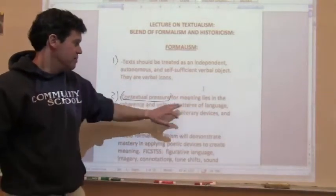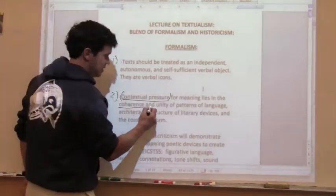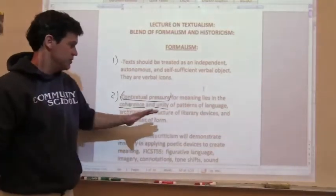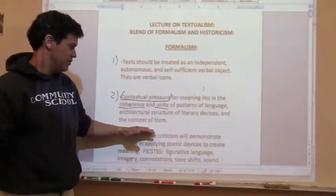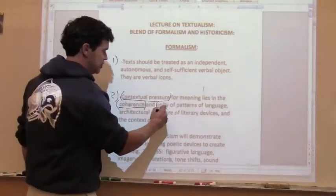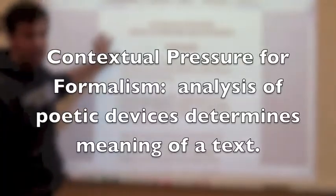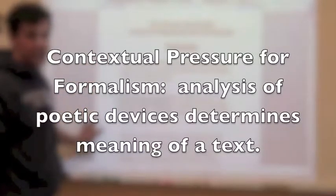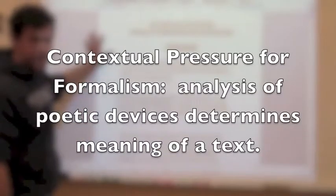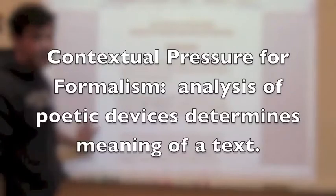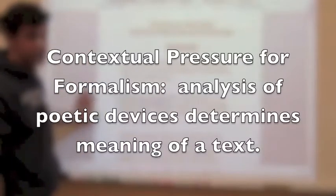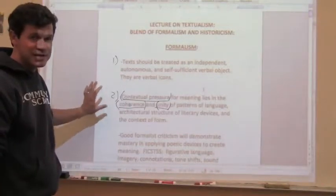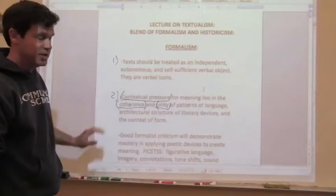So for a formalist, meaning lies in coherence and unity. All texts must cohere in the patterns of language, the structure of literary devices, and the context of form. Coherence and unity are words you'll hear a lot with formalism. If you have an image in the beginning of the poem and another image later on, they should work together to create meaning. If they contradict or don't cohere, and it's unclear how they work together, then formalists would argue you have a bad poem.